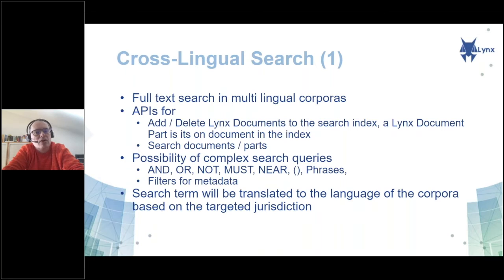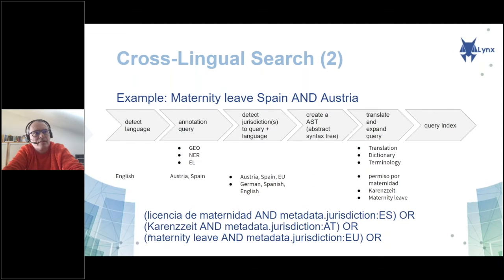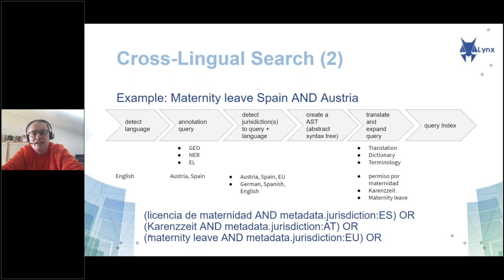To give you a little bit more of how the whole search system is working — as an example, if you write in our example sentence 'maternity leave in Spain and Austria', and you want to have information for Spain and Austria, the first thing is we try to detect the language in which you have created the query.